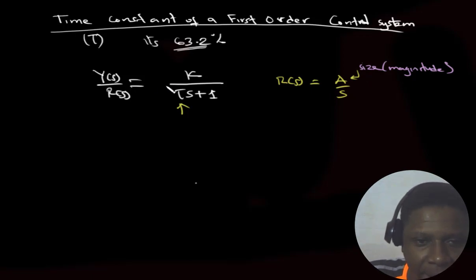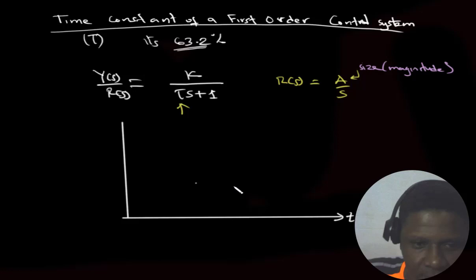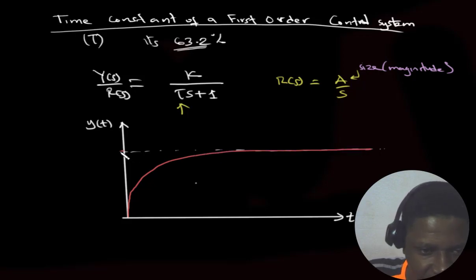So, if we have this system, if we draw the characteristics of its output, let's say we have time here and this is our output in time. So, let's assume if this is the final value, if this is our response, the final value here is going to be like A times K, where K is the static DC gain as shown here.